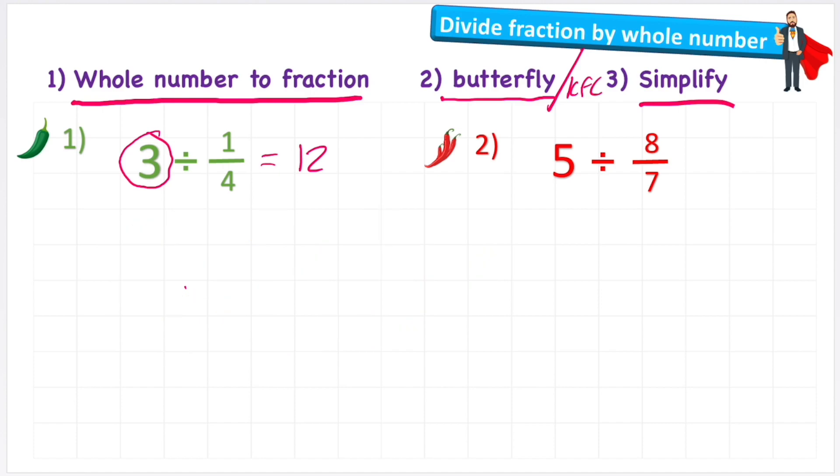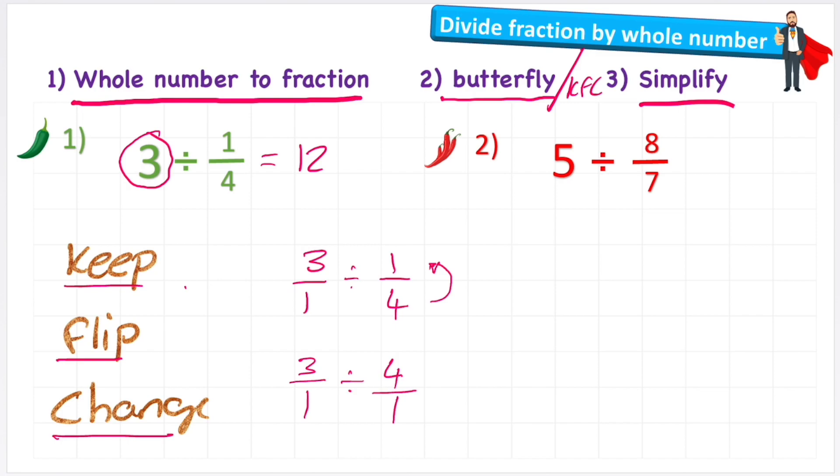Okay, but I promised you a different method. Now let's have a look at the KFC method. KFC stands for Keep, Flip, and Change. So what do these refer to? Well, let's write our question down here again, but we know that first we must convert our whole number to a fraction, so let's put our 3 over 1 divided by 1/4. So my Keep refers to keeping this first fraction—I'm not going to do anything to this first fraction. My Flip refers to the second fraction—I'm going to flip my fraction upside down. And then I'm going to Change, and this means change the symbol, and I'm going to change it to multiply.